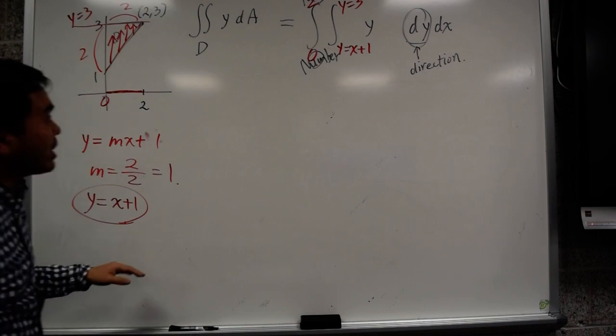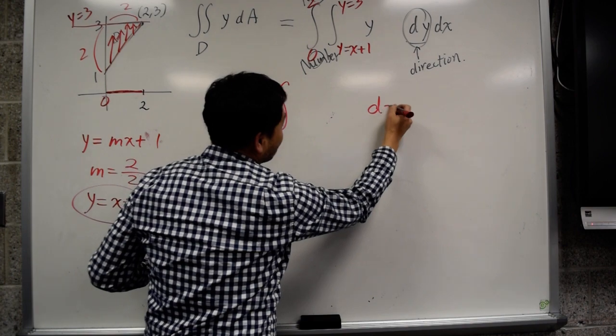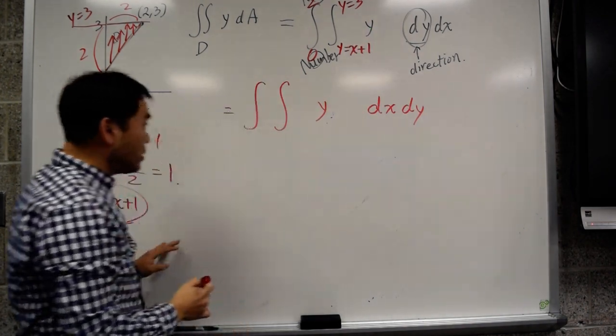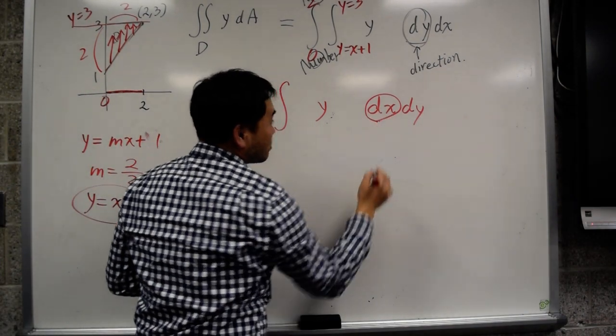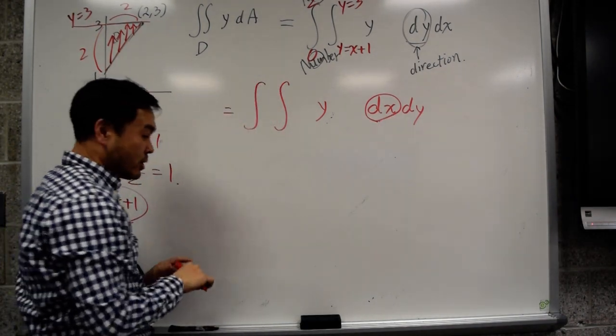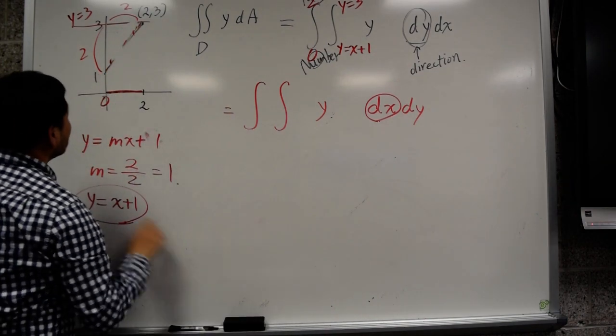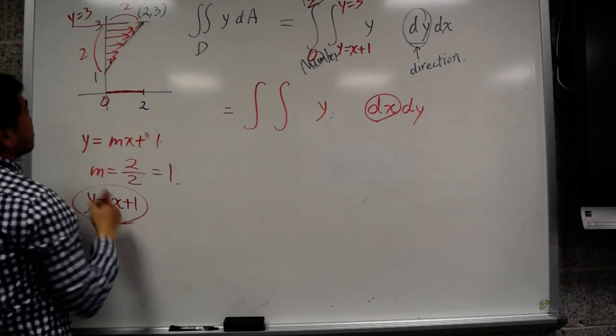Now what's a little more challenging is how would you write down if it was dx dy. The function here doesn't change. But if you use dx, now the direction is increment in the x direction. So instead of painting this region upwards, what you do is you go right. You're painting this way.